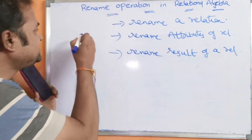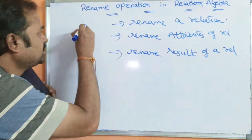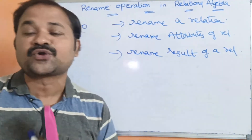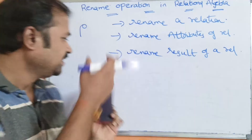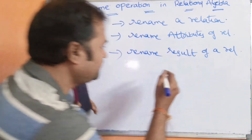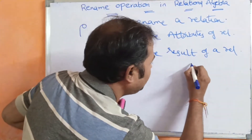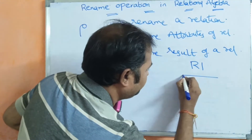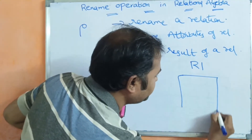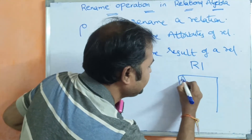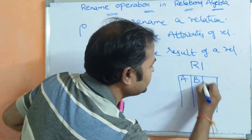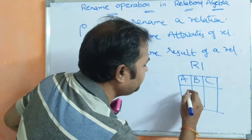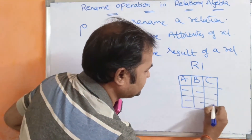The rename operator is denoted by the rho symbol, pronounced as rho. Let us take a table. Let we have a table called R1, which contains the attributes A, B, C. A, B, C are the attributes of the relation, and we can have several rows.